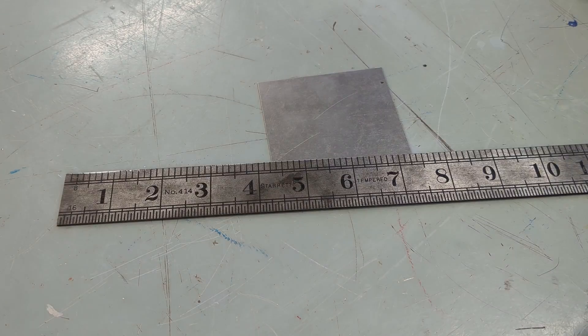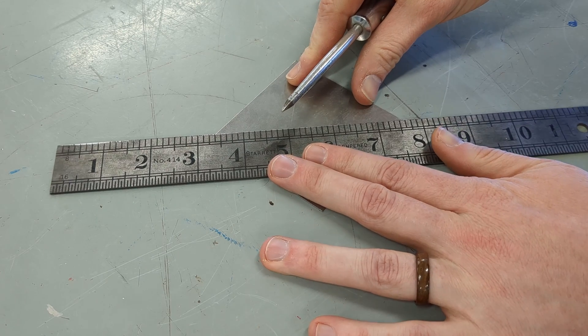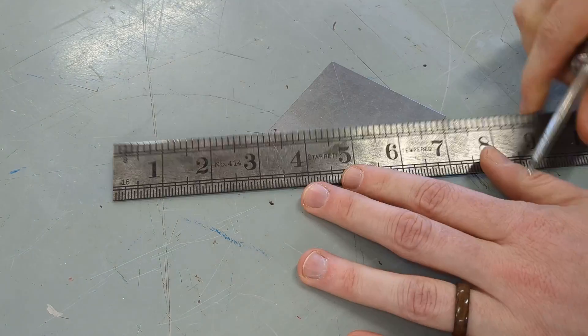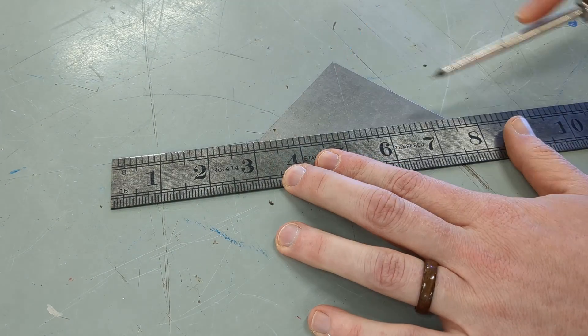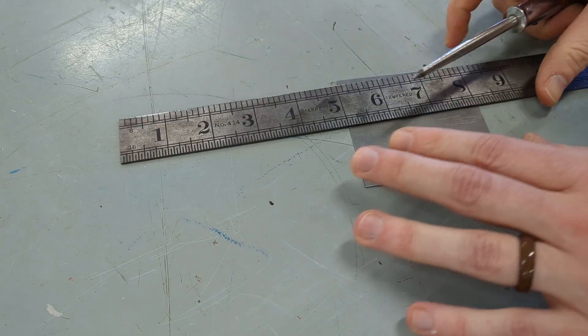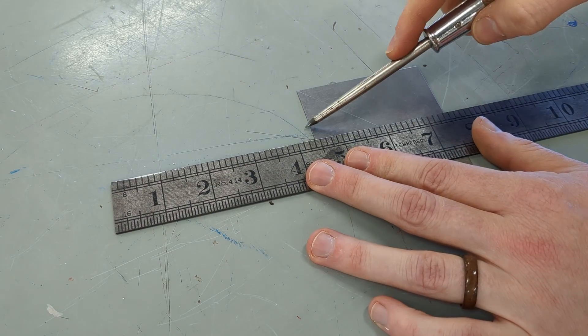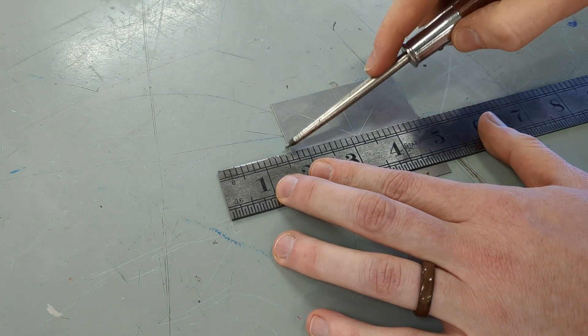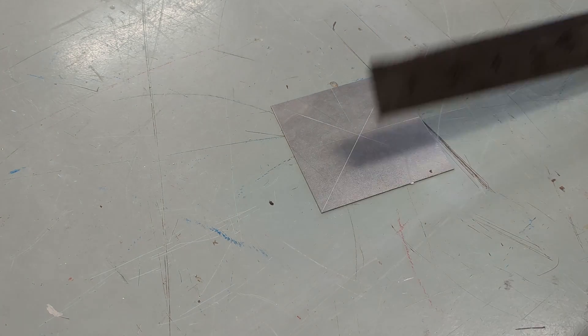To make the flower look nice and uniform, we're going to mark some reference lines. For this you'll need a straight edge and something to mark your lines with. I'm using a steel rule and a scratch all, but you could do the same thing with a folded up piece of paper and a pencil if needed. Use a straight edge to mark two diagonal lines from corner to corner to find the center of your piece, and then mark a line through the center to mark the halfway point of each side. It should look something like this when you're done.